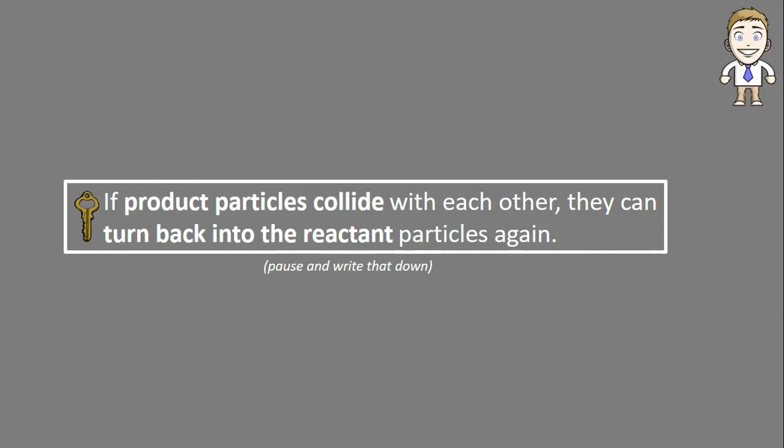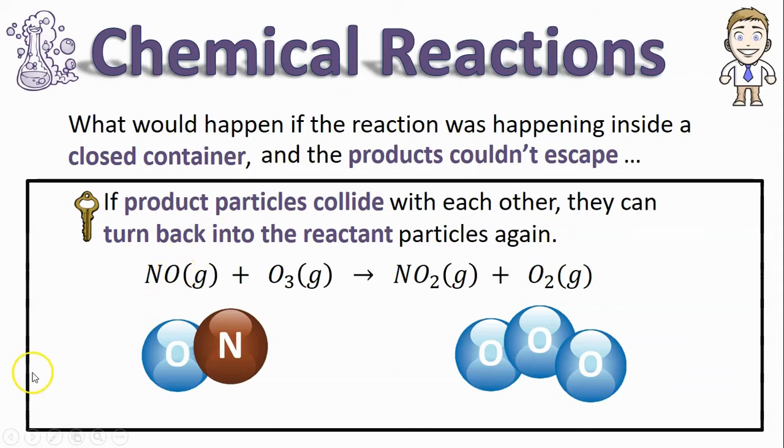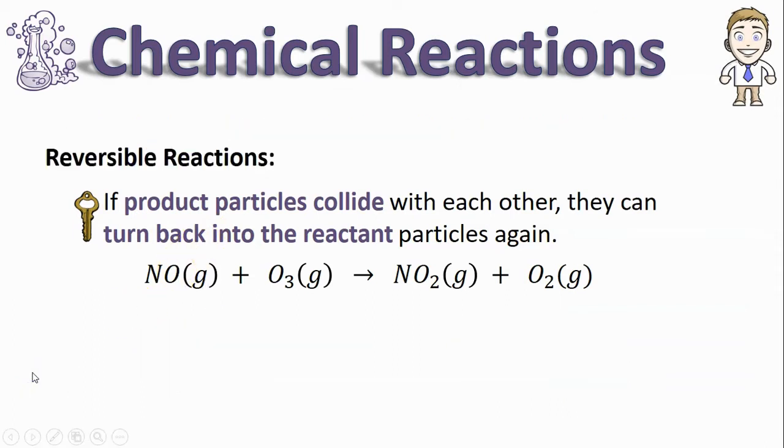And this happens for some reactions. If the product particles collide with each other, they can turn back into the reactant particles again. There's a name for this type of reaction: it's called a reversible reaction.